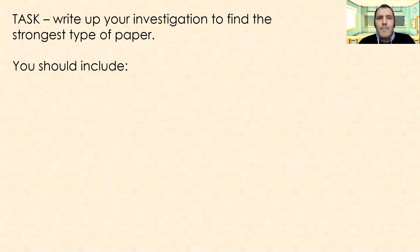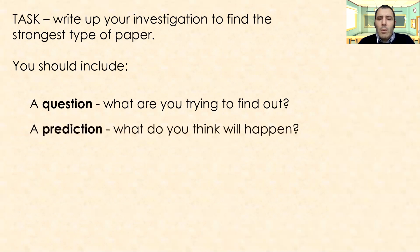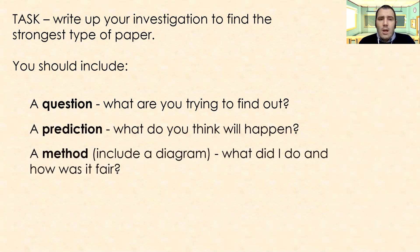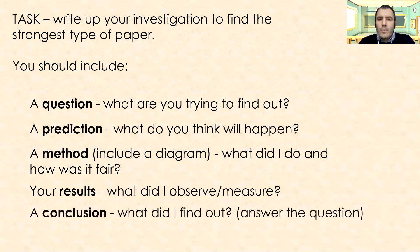So your task for today. You're going to write up your investigation to find the strongest type of paper. You should include a question. What are you trying to find out? A prediction. What did you think was going to happen? A method. Include a diagram. What did I do? How did I make sure it was fair? Your results. What did you observe? And what did you measure? So think about it. You're measuring how much weight it's taken before you see the paper rip. A conclusion. What did you find out? That's going to answer the question you asked at the very beginning, all the way back at the top.